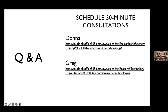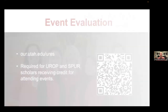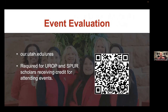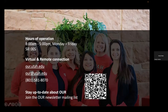We are now at a full hour. You have our contact information and links to our calendars in this slideshow where you can schedule consultations. If you have more questions, feel free to follow up through email or by scheduling a consultation. Thank you, Donna and Greg, for an amazing presentation. A reminder to everybody about the evaluation form — the link is in the chat, or you can scan the QR code. EURP and SPUR scholars must fill out this evaluation to receive credit for attending. You can reach the Office of Undergraduate Research at our.utah.edu, email at our@utah.edu, or call 801-581-8070.